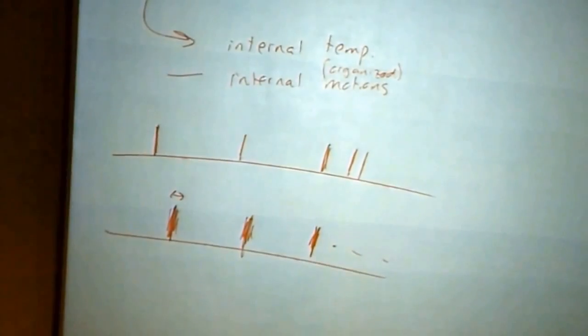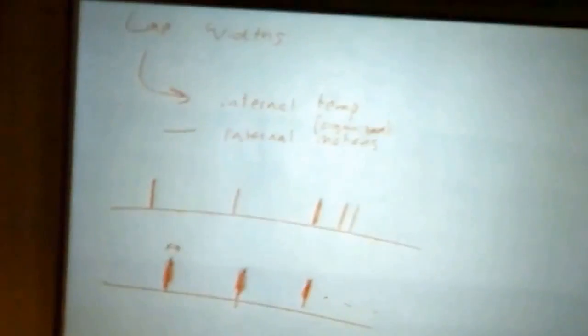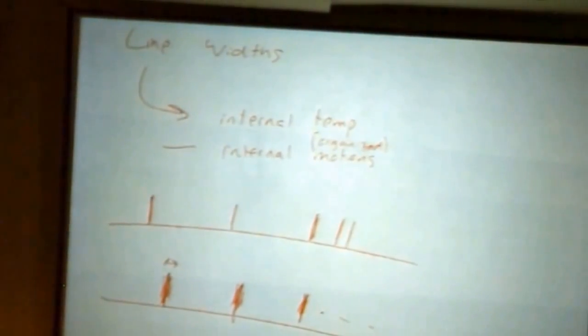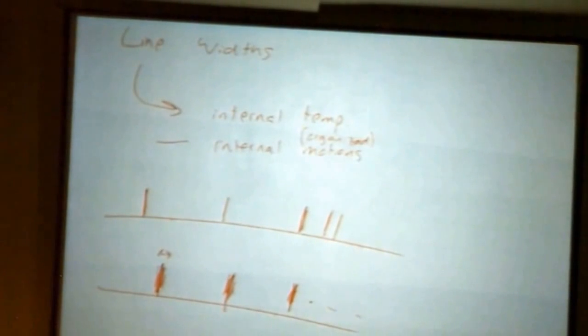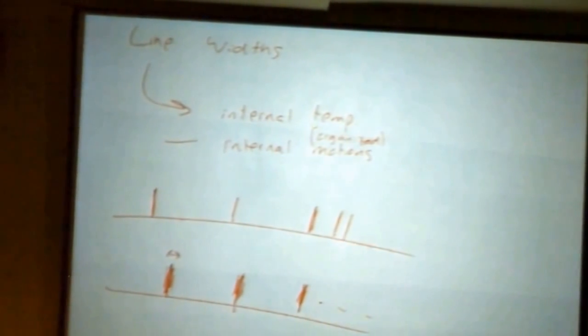Temperature, it's random motions bouncing around. Here, this is an internal motion. You can imagine gas clouds with their organized flows of the gas as well. So you can start to get into physical descriptions, but you've got to be careful about it.